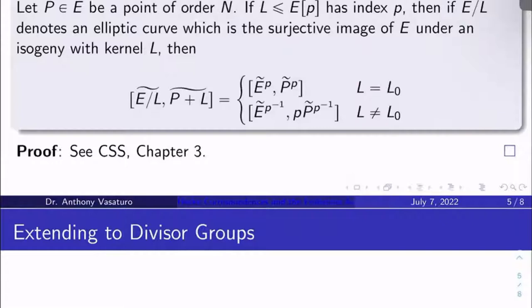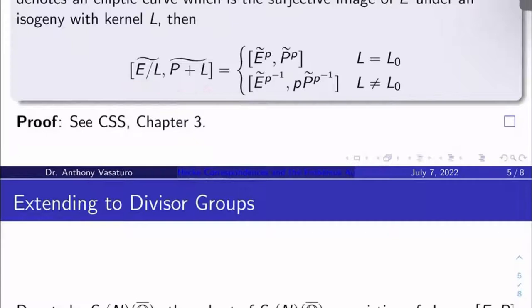So here's what you do. The enhanced elliptic curve class of the reduction of [E/L, P + L] is given as follows. It depends on whether or not L is L₀ or not. So remember L₀ is just the kernel of the reduction map.